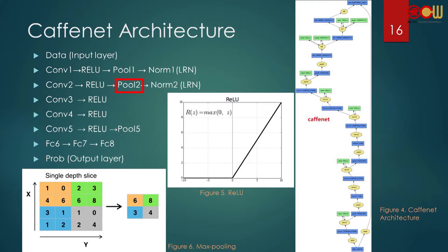The pooling layers implement non-linear down-sampling. There are several non-linear functions to implement pooling, and CaffeNet uses max pooling. Like in figure 6, you can think of the pooling layer having a 2x2 mask — it's like a filter.